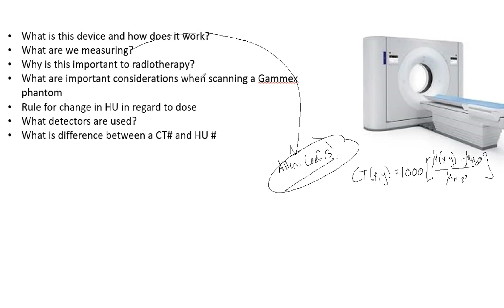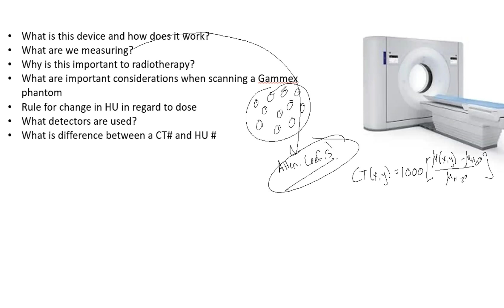What are some important considerations when scanning a GAMEX phantom? The GAMEX phantom is something you run annually on your CT. It's essentially a circle with a bunch of different plugs, each having different HU, CT values, and electron density. Some of the plugs include titanium, lung, cork, air, water, and acrylic — all materials for which we know the specific electron density.